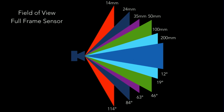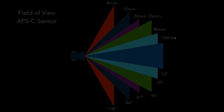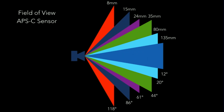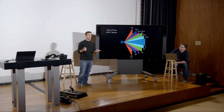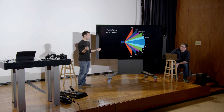To show the range on a full frame sensor: 14mm gives about 114 degrees field of view, 24mm gives about 84 degrees, and 35mm gives 63 degrees. Comparing directly against APS-C: you need different focal lengths to get the same fields of view. A 35mm lens is not always the same depending on your camera system — I want to hammer that home.